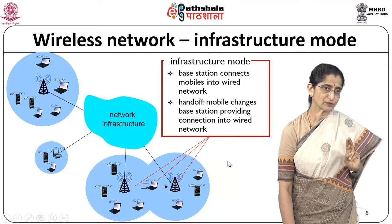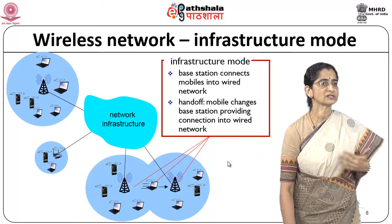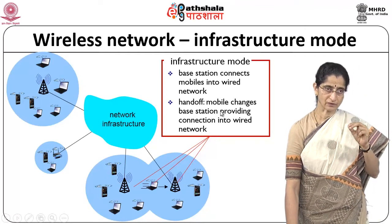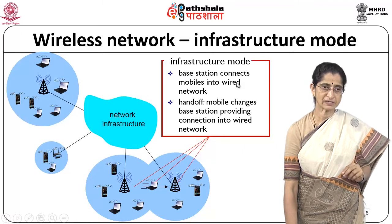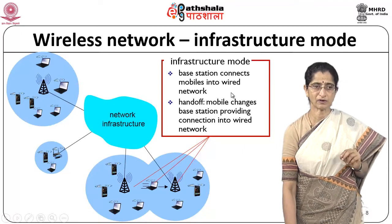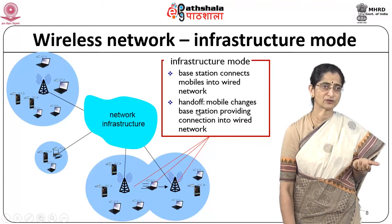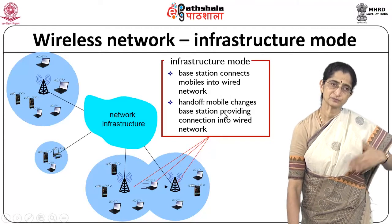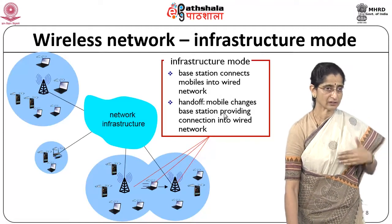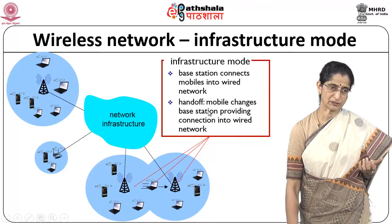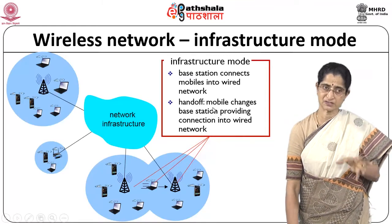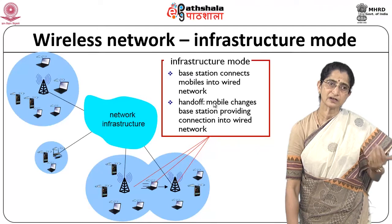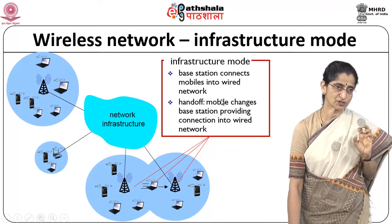There are two modes of operation in wireless networks. In the infrastructure mode, there is a base station that connects mobile devices to a wired network. Handoff mechanisms allow a mobile to change base station while maintaining network connectivity. Specific devices are responsible for providing connectivity, routing functions, and so on — that is what infrastructure mode means.